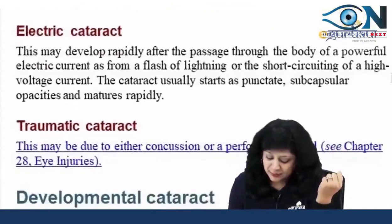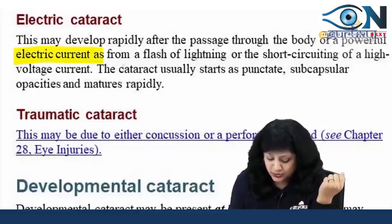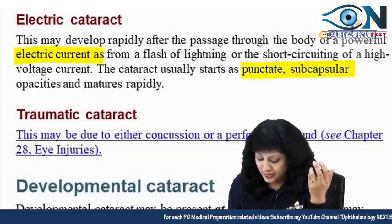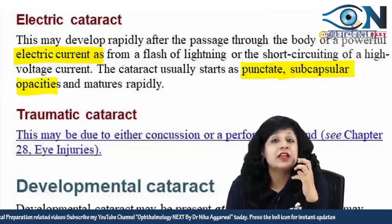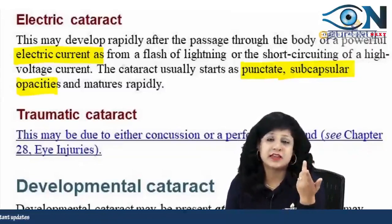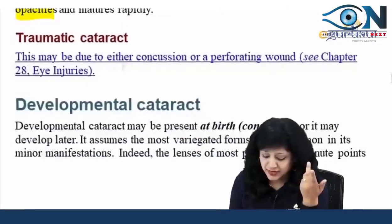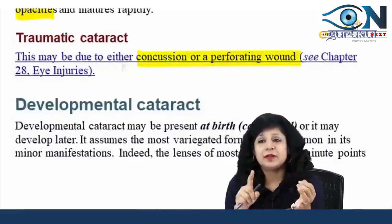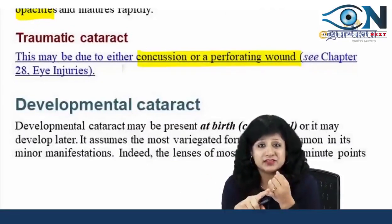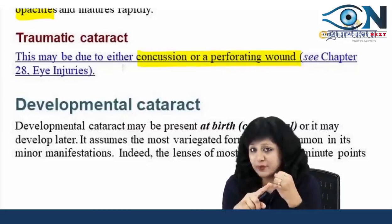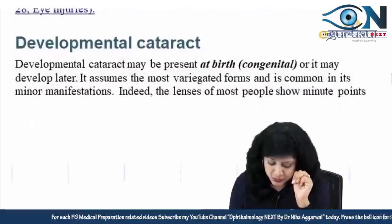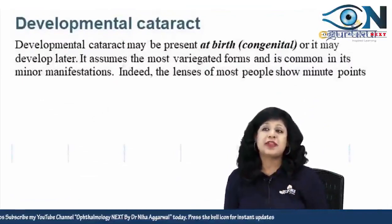Electric cataract may develop rapidly after passage of an electric current — it is mostly the punctate subcapsular type. Then we have traumatic cataract, which can result from blunt trauma, perforating trauma, or penetrating trauma. The audience is asked: what is the name of the cataract caused by blunt trauma, and what is the name caused by penetrating trauma?